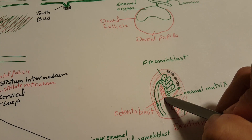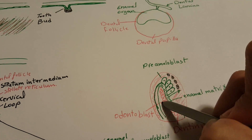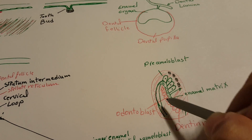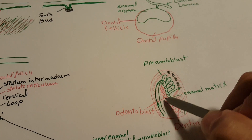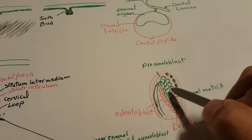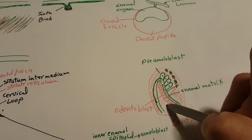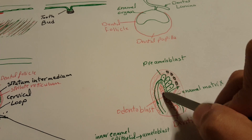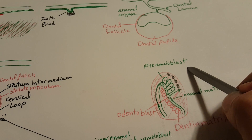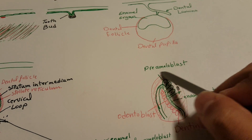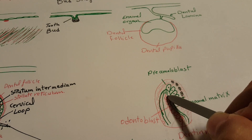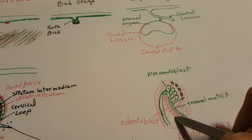The odontoblasts move down, leaving behind the formation of the dentine matrix. The elongation of the inner enamel epithelium enhances the formation of odontoblasts, which elongate and move down leaving the dentine matrix. Then these elongated cells — the pre-ameloblasts — transfer into ameloblasts.